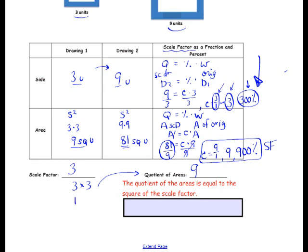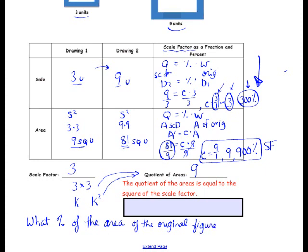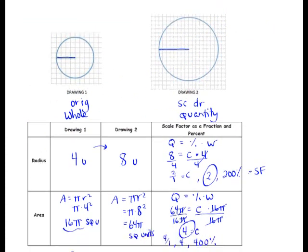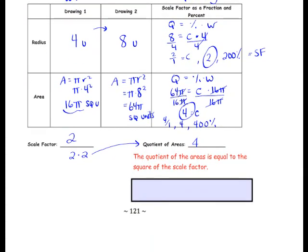Remember that we call the scale factor K, and K squared equals the quotient of the areas. The quotient of the areas compares the area of the original and the scale drawing — what percent of the area of the original figure is the area of the scale drawing? You can answer that question by simply squaring the scale factor.